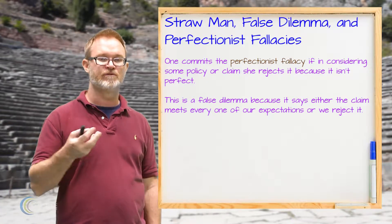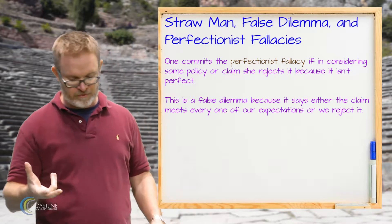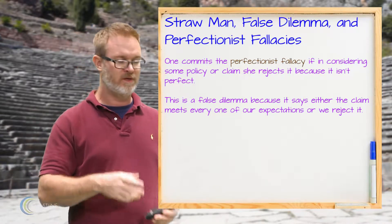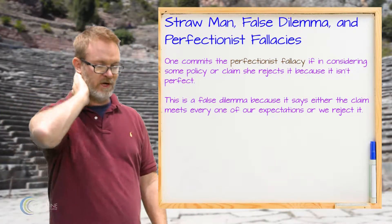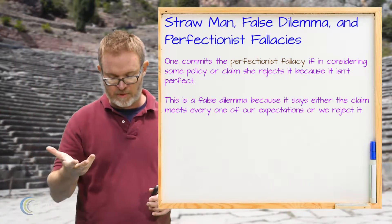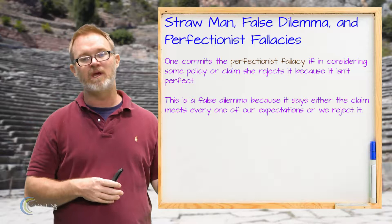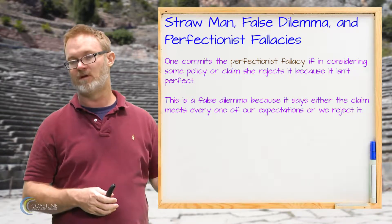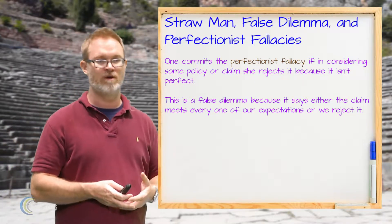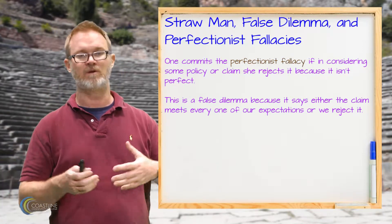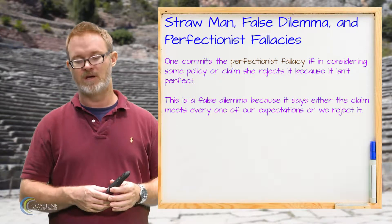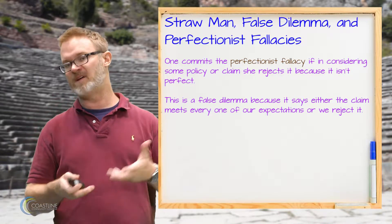A perfectionist fallacy is a kind of false dilemma. The idea is it says essentially, 'It's got to be either perfect or we don't do it.' The interesting thing is it's often used when it really doesn't make sense to use it. For example, somebody might say, 'I'm not going to quit smoking because quitting smoking — is it going to make me live forever?' Of course, the reason to quit smoking isn't that you want to live forever; it's that you want to live healthier. The mistake with the perfectionist fallacy is that you're asking for perfection when you should be asking for improvement.